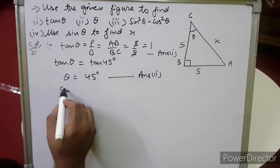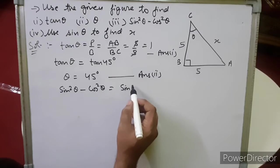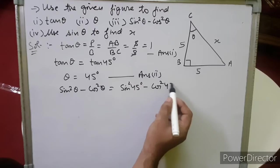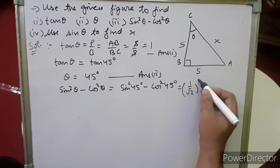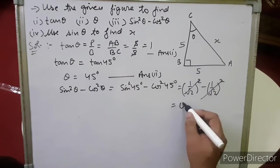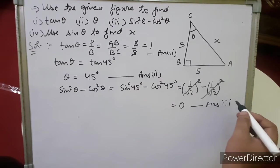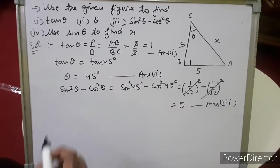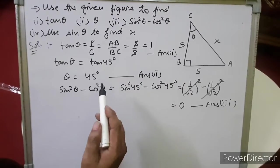Now calculate sin²θ − cos²θ. Substituting θ = 45°: sin²45° − cos²45°. Sin 45° = 1/√2 and cos 45° = 1/√2. Both values are the same, so they cancel: the answer is 0.